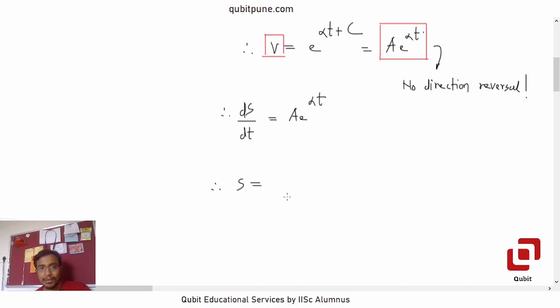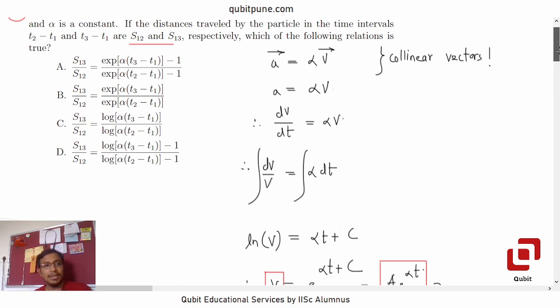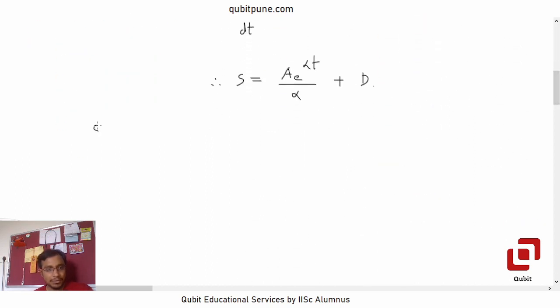So s is equal to a e to the power alpha t upon alpha plus, this time let us call it d, the arbitrary constant. We want s13 and s12's ratio. So s13 upon s12 will be.